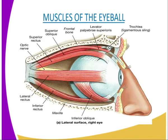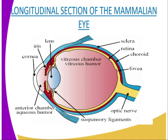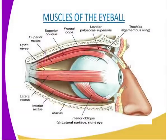In land vertebrates, there is a lacrimal gland that continuously secretes a watery, saline, and antiseptic fluid which we normally call tears. The tears moisten the cornea and wash foreign particles out of the eye. The fluid drains through the lacrimal duct into the nose. In mammals, including humans, the lacrimal gland is beneath the upper eyelid, while in other animals it is located beneath the lower eyelid.